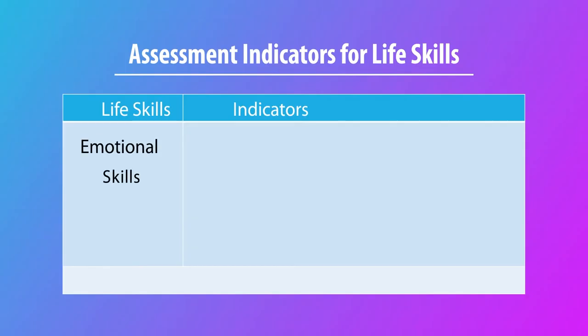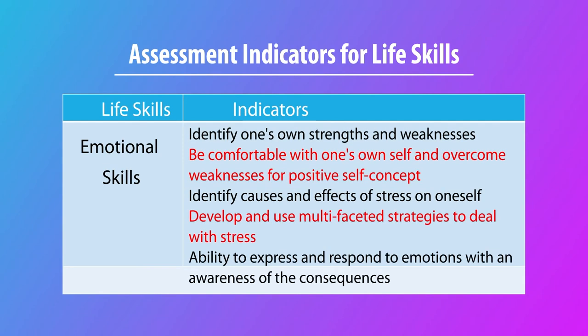For emotional skills, indicators include: being able to identify one's own strengths and weaknesses; being comfortable with oneself and overcoming weaknesses for a positive self-concept; identifying the causes and effects of stress on oneself; developing and using multi-faceted strategies to deal with stress; and showing the ability to express and respond to emotions with an awareness of consequences. If these are observed, emotional skills are developing.